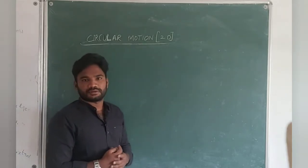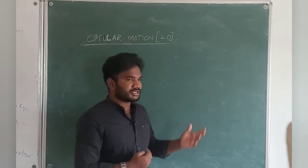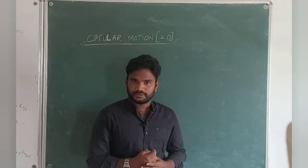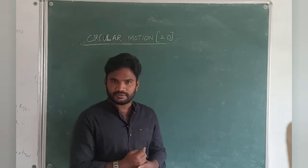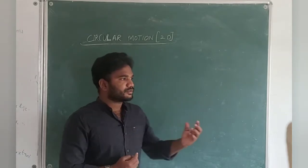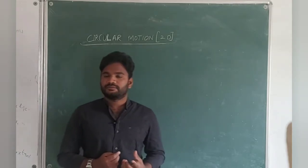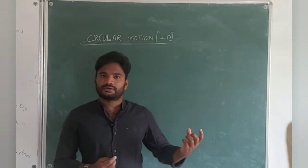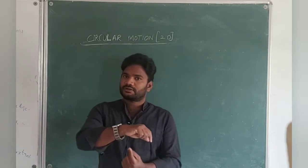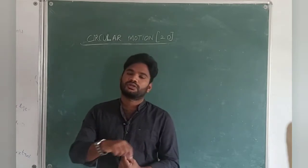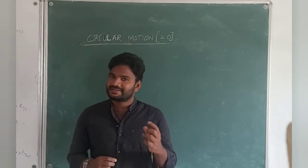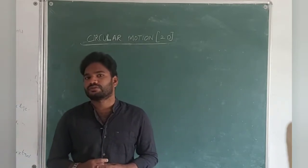Let me go with one more example. In an atom, we will be getting electrons. Those electrons are revolving around the nucleus — that comes under circular motion.